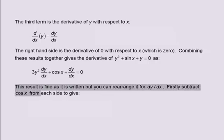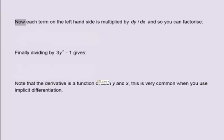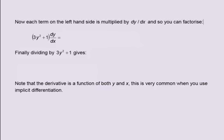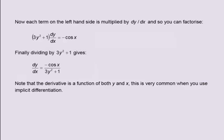Firstly, subtract cos x from each side to give 3y squared dy by dx plus dy by dx equals minus cos x. Each term on the left-hand side is multiplied by dy by dx, so you can factorise. Taking out the common factor gives 3y squared plus 1, all multiplied by dy by dx, equals minus cos x. Finally, dividing by 3y squared plus 1 gives dy by dx equals minus cos x divided by 3y squared plus 1. Note that the derivative is a function of both y and x, which is very common when using implicit differentiation.